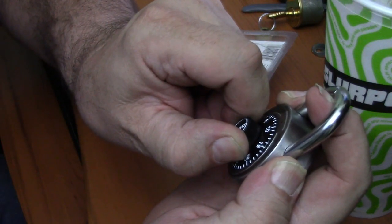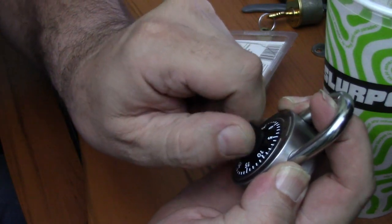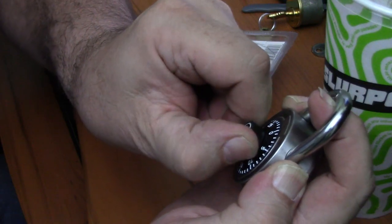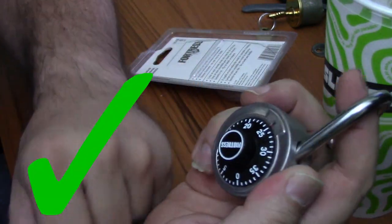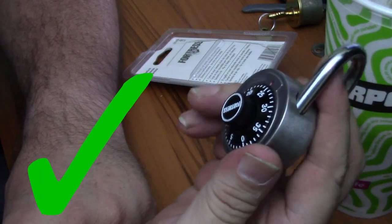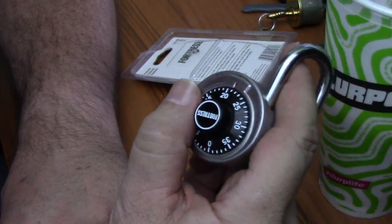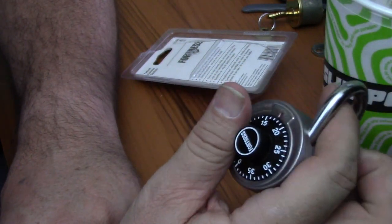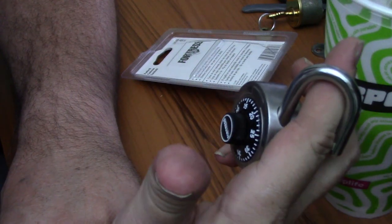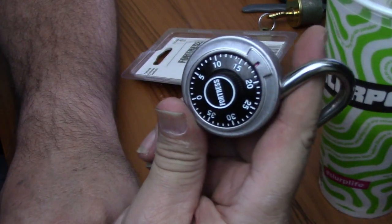Alright now we'll just go back the other way. Yep it was hard. And when we get to the number it should pop right open. And that is, it still works. I can't believe it. I can't believe 40 years later you can still open this lock as quick without a combination as if you had the combination.